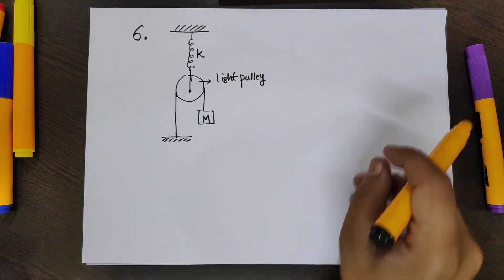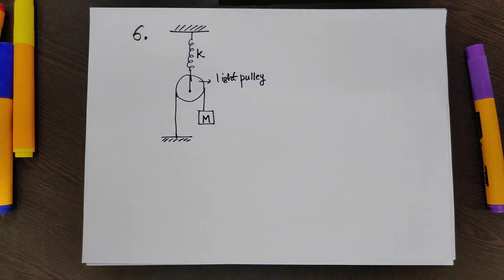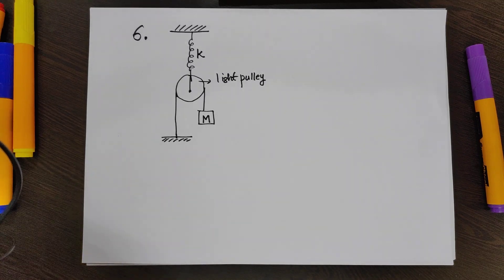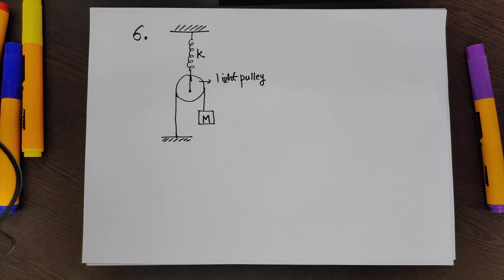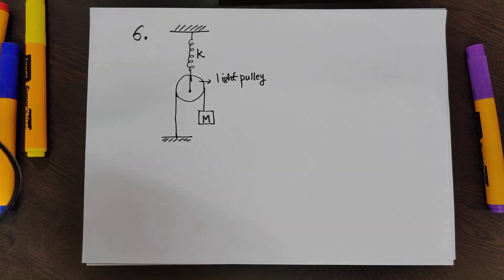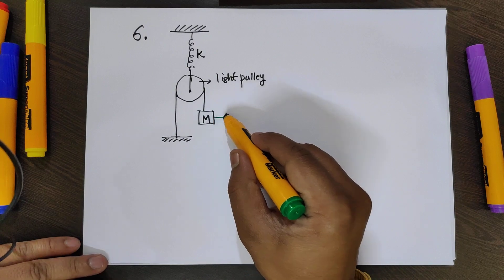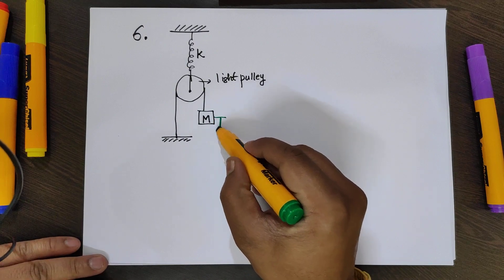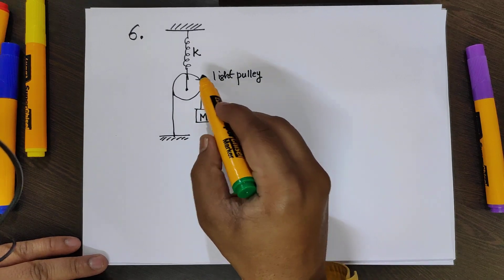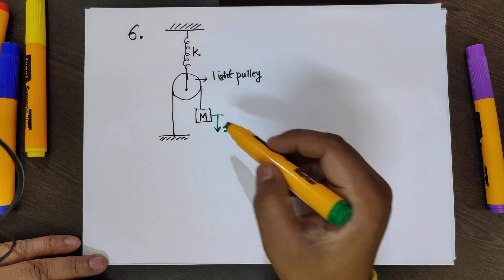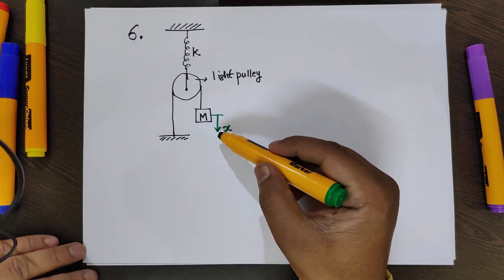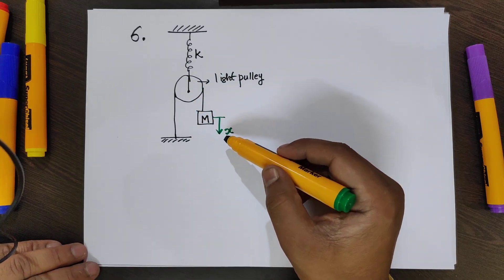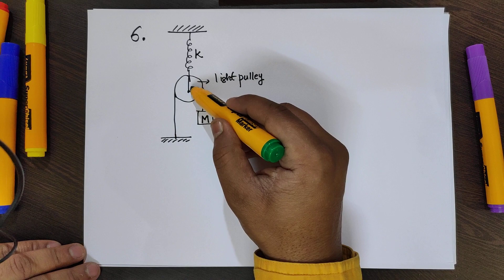Question 6 also involves a light pulley and we need to find out the time period of simple harmonic motion of the block. If you displace this block by x downward, then the pulley will move a distance x/2 downward.